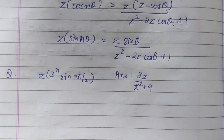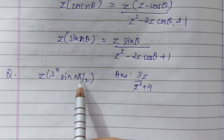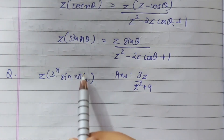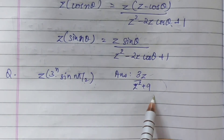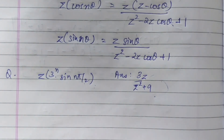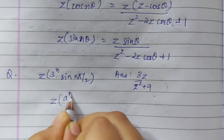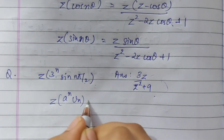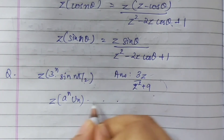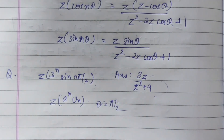You can try out a simple question: find Z of 3 to the power n times sin(nπ/2). You will use the formula for Z of a to the power n times u(n), continue to evaluate, and note that theta equals π/2 here. Try it out.